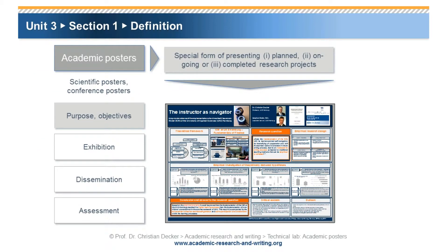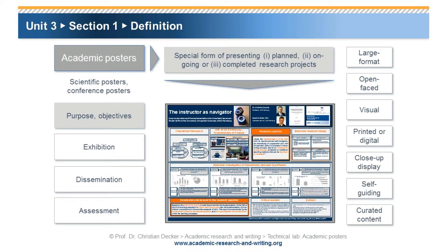Academic posters are a special form of presenting planned, ongoing, or completed research projects. The purpose or objectives of academic posters include exhibition, dissemination, and assessment. Further characteristics of academic posters can include a large format, an open-faced, often single-sided nature.